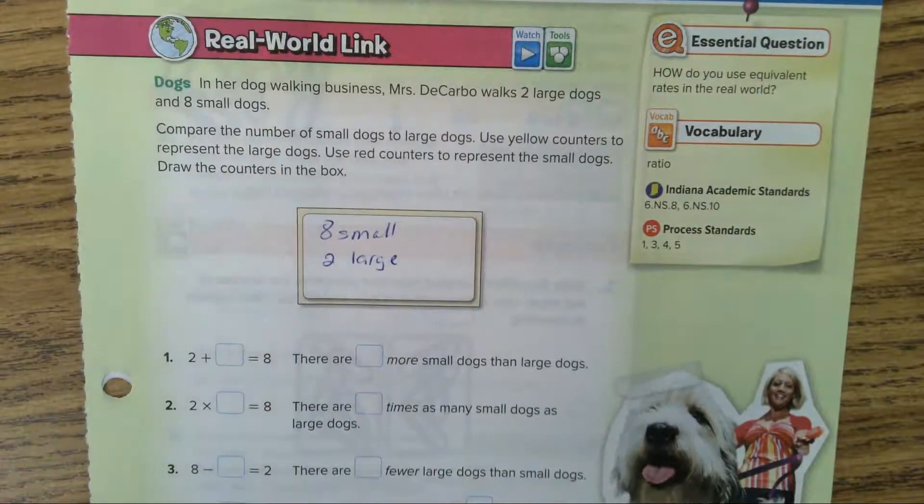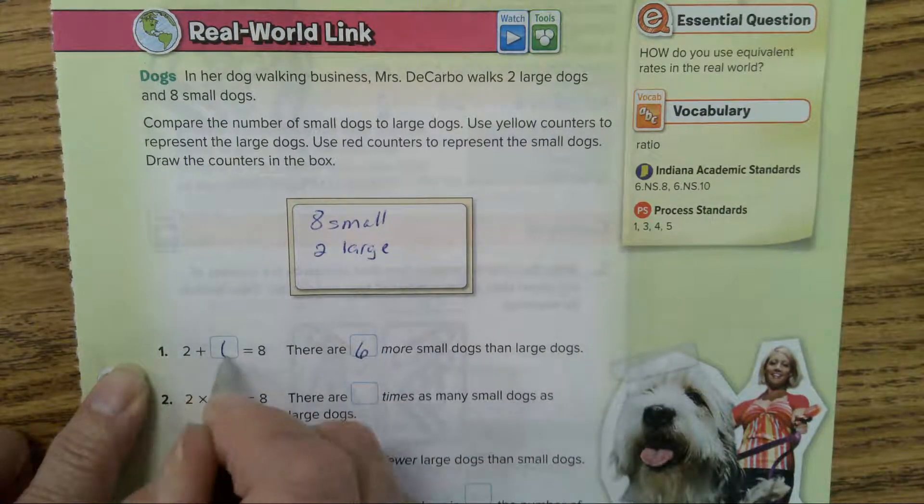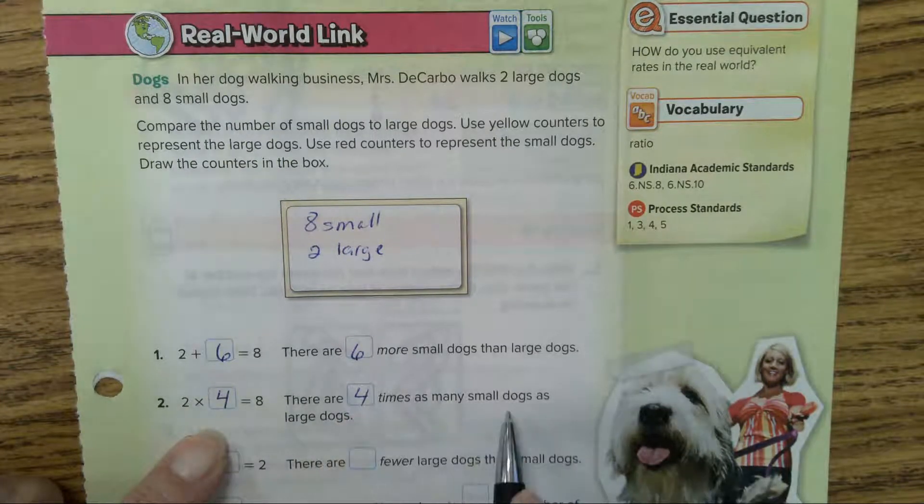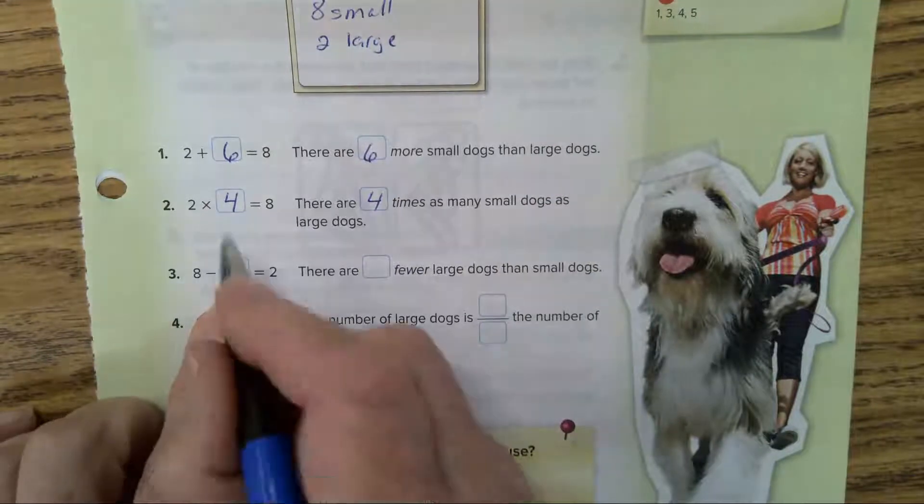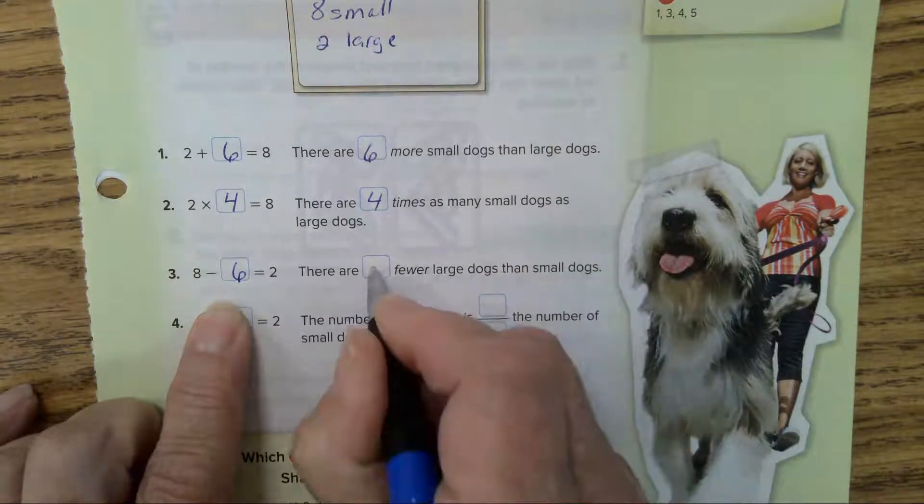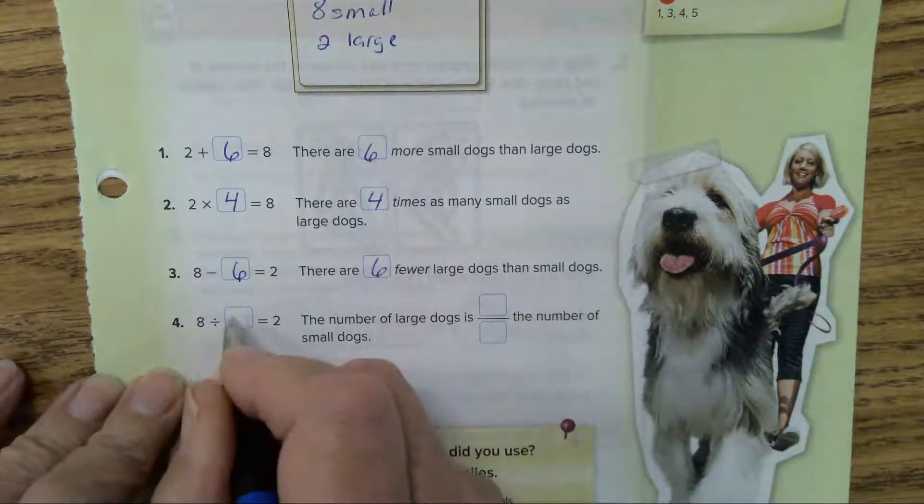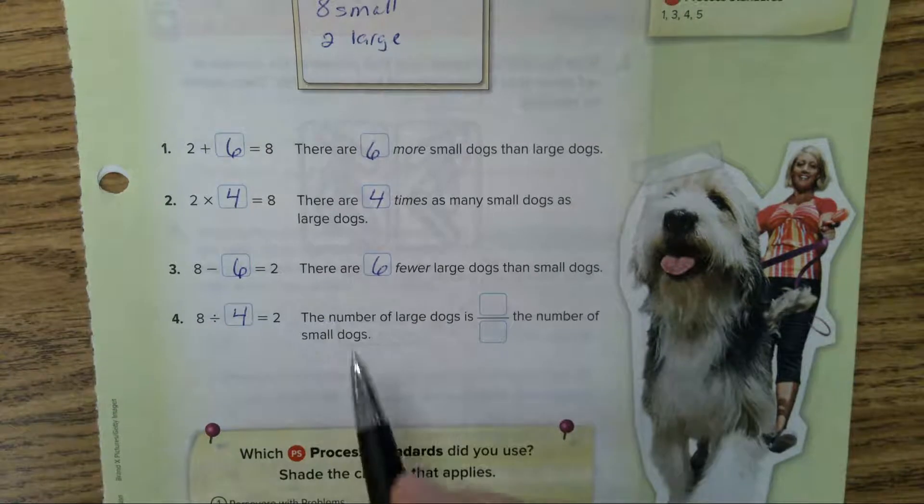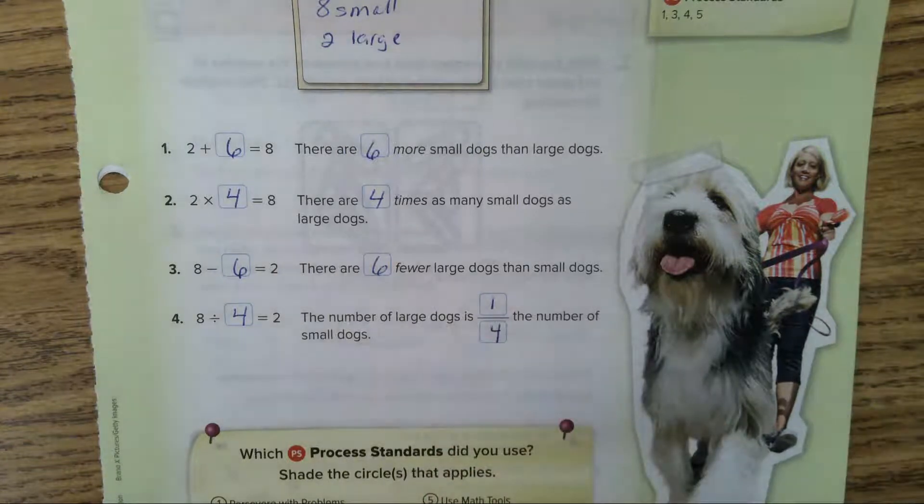There are six more small dogs than large dogs. Two plus six is eight. Two times four is eight. There are four times as many small dogs as large dogs. Eight minus six is two. There are six fewer large dogs than small dogs. Eight divided by four is two. The number of large dogs is one-fourth the number of small dogs.